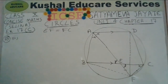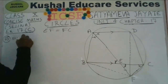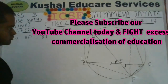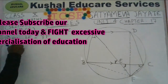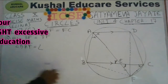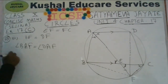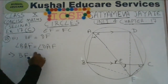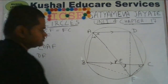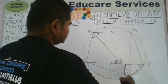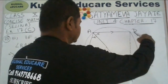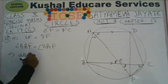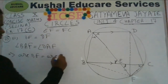In the second part of this question we have to prove that BF equals DF. One of the simplest approaches is to look at angles BAF and DAF. Since the angles subtended in the same segment are equal and AE bisects angle BAD, these angles are equal. By the converse of the same-segment theorem, if the angles are equal, arcs BF and DF must be equal. If arcs BF and DF are equal, then chords BF and DF must also be equal, because equal arcs have equal chords.